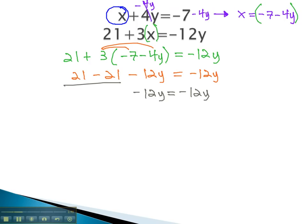We can't divide by a variable, so we must add 12y to both sides, so our variables are on the same side. As we do, we notice the variables subtract out completely, and we end up with 0 equals 0. 0 does equal 0. This is a true statement.